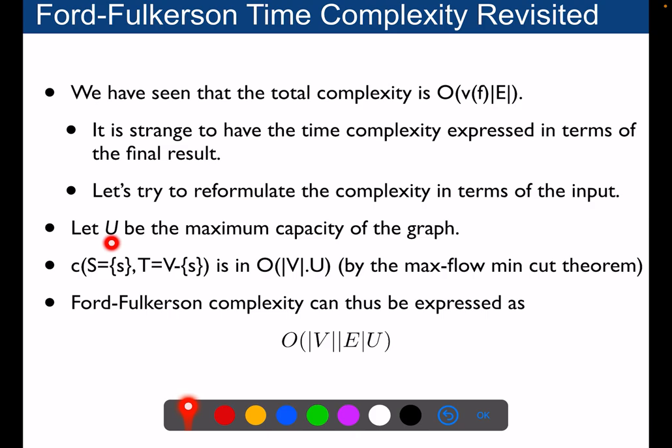So instead we will use U as the maximum capacity of the graph on any edge. We can express the time complexity here. We know that the cut of that partition between s and t, which is the rest of V minus s, is at most this.